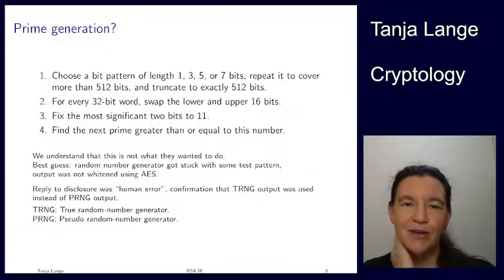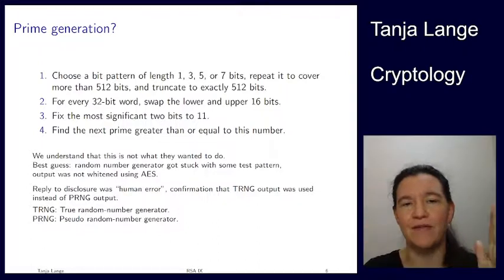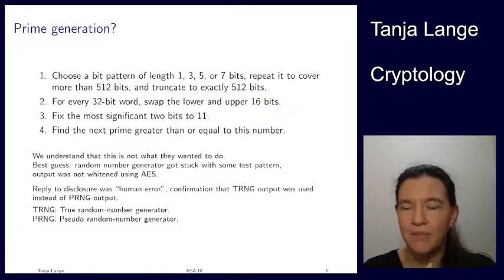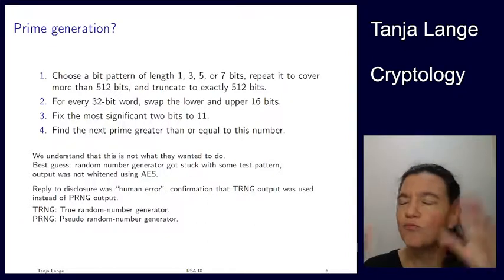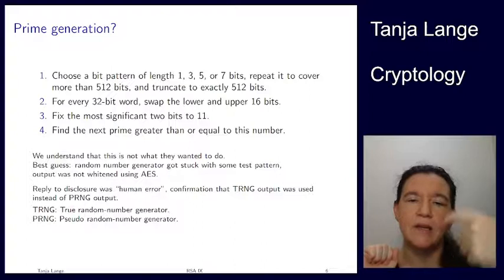So, okay, let's speculate that the prime generation worked as follows. You pick a bit pattern, you repeat it all the way till you have 512 bits. You truncate to exactly 512. Then you do the swap for the top and bottom part. This actually sort of makes sense if you look at how these numbers would be generated and how you would be assigning them something. So step two, we want to put the two top bits to 11 and then we increment at the bottom till we find a prime.